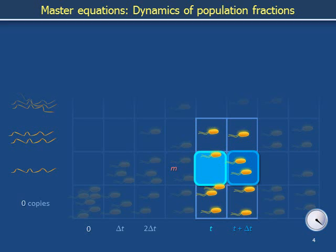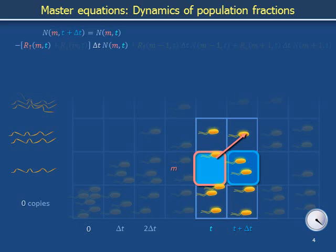Were it not for transcription or degradation, these two boxes would contain the same number of cells N. However, a portion of the cell population starting out with m copies of messenger RNA, indicated by the pink box, will gain another copy of messenger RNA through transcription. The number of cells in the pink box is N on m,t. Of these cells, a fraction represented by the product of the rate coefficient R sub up on m,t and delta t removes itself from state m and puts itself into state m plus one. Removal corresponds to the negative sign in front of the rate coefficient in the equation. For short durations of the time interval delta t, the number of cells removed in this way is linearly proportional to delta t. The longer the duration of time between the two blue boxes, the greater the number of cells that have removed themselves along the pink arrow.